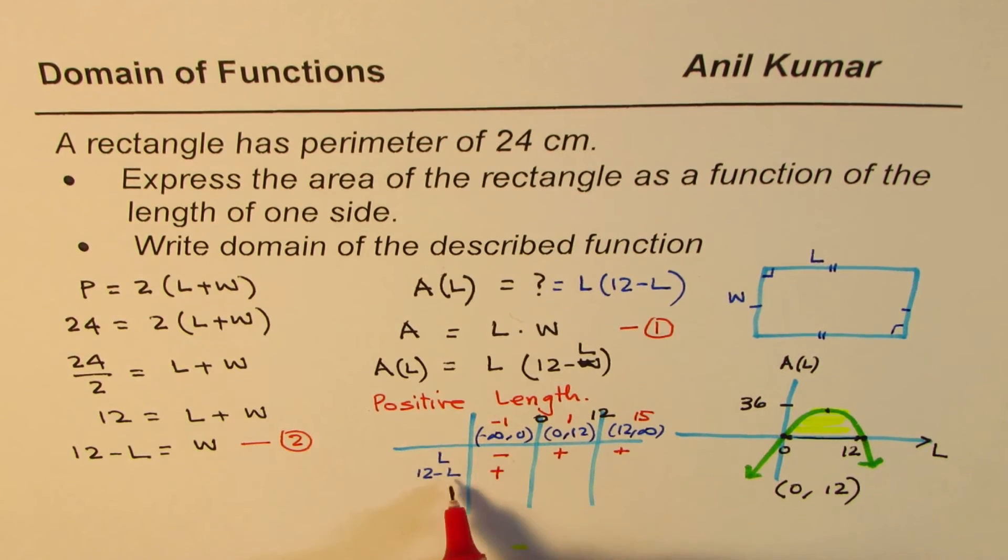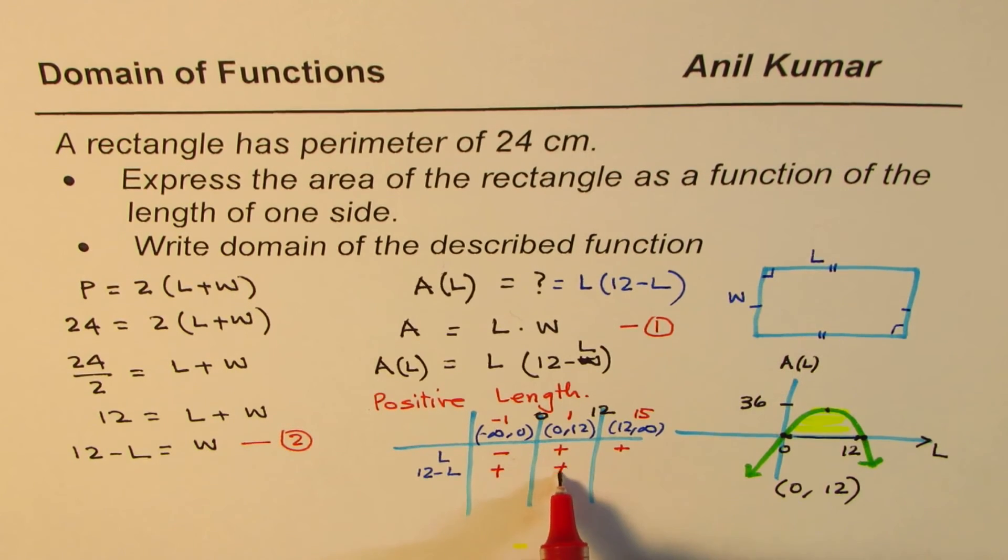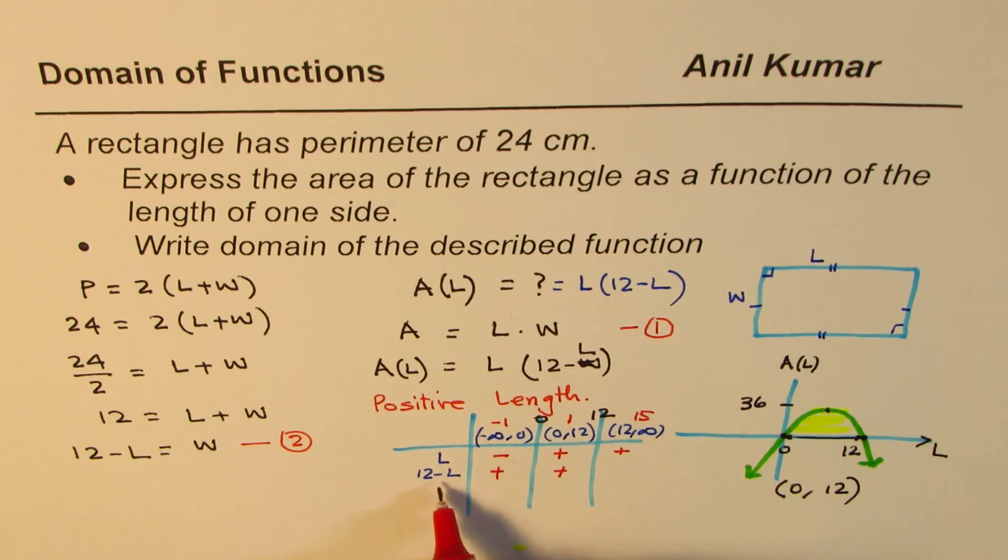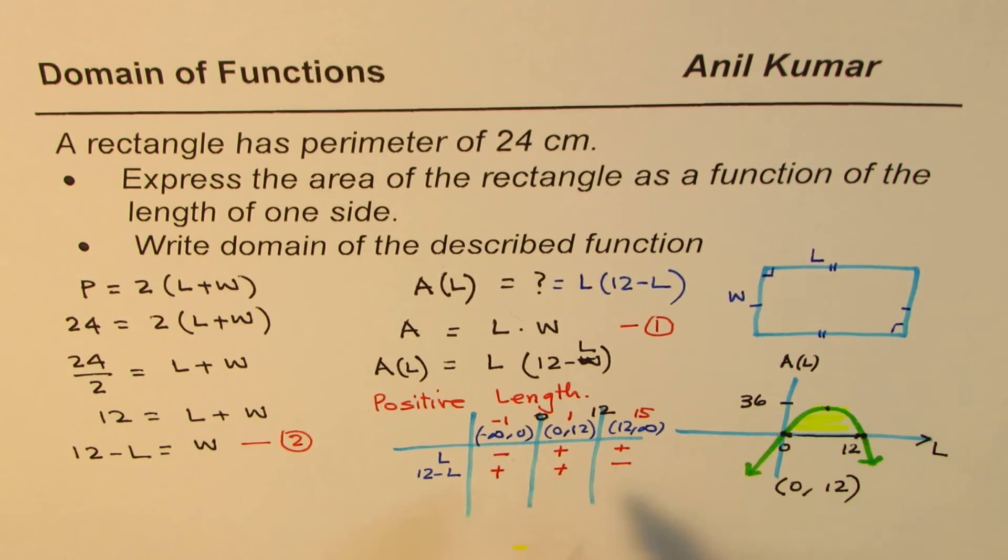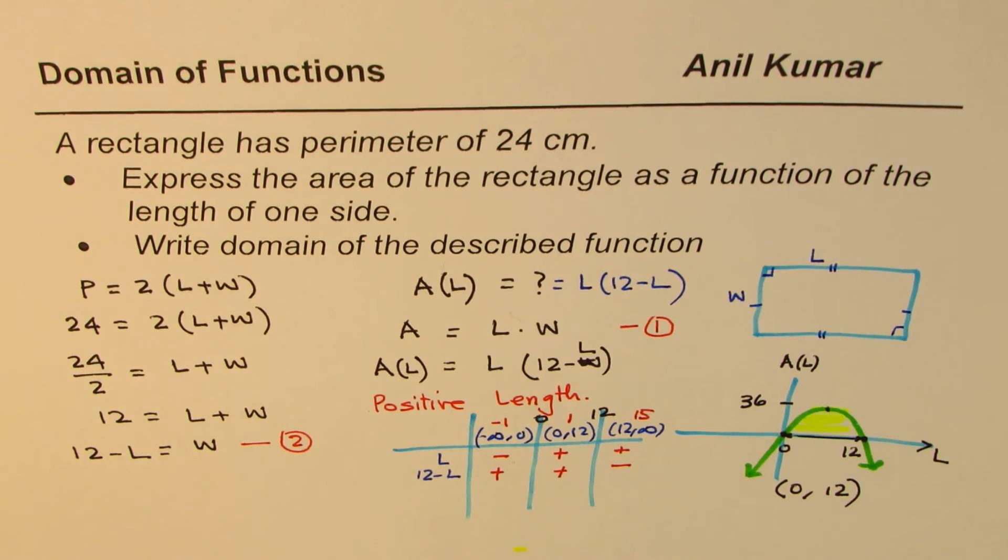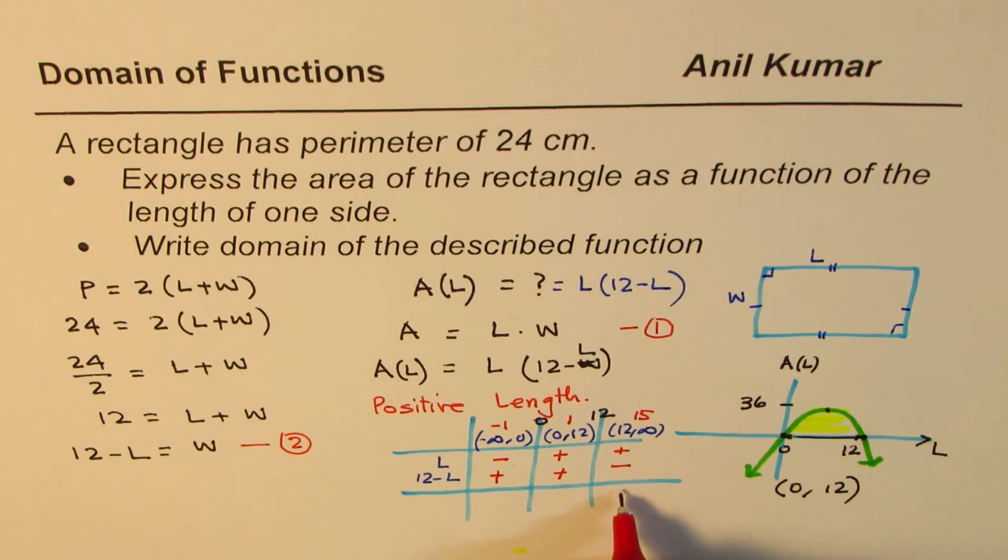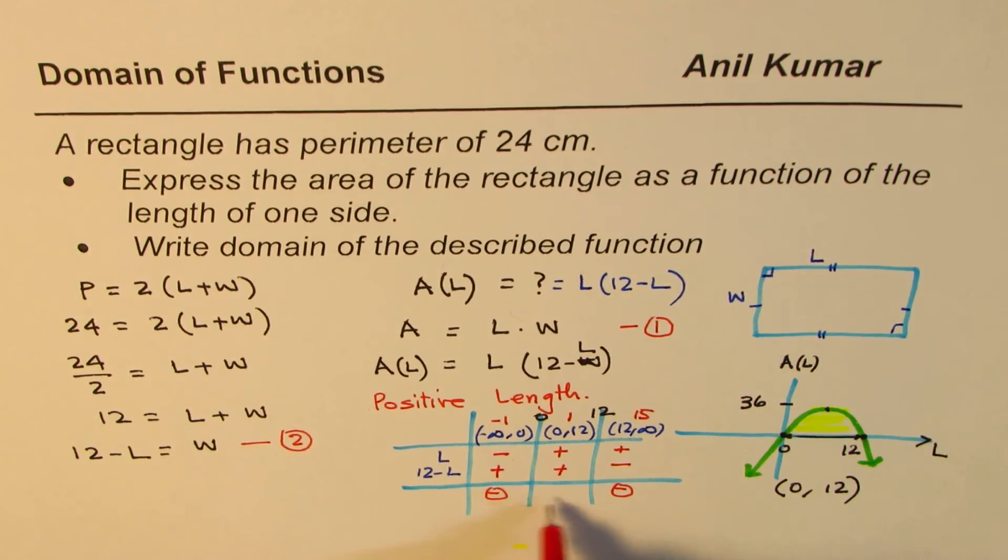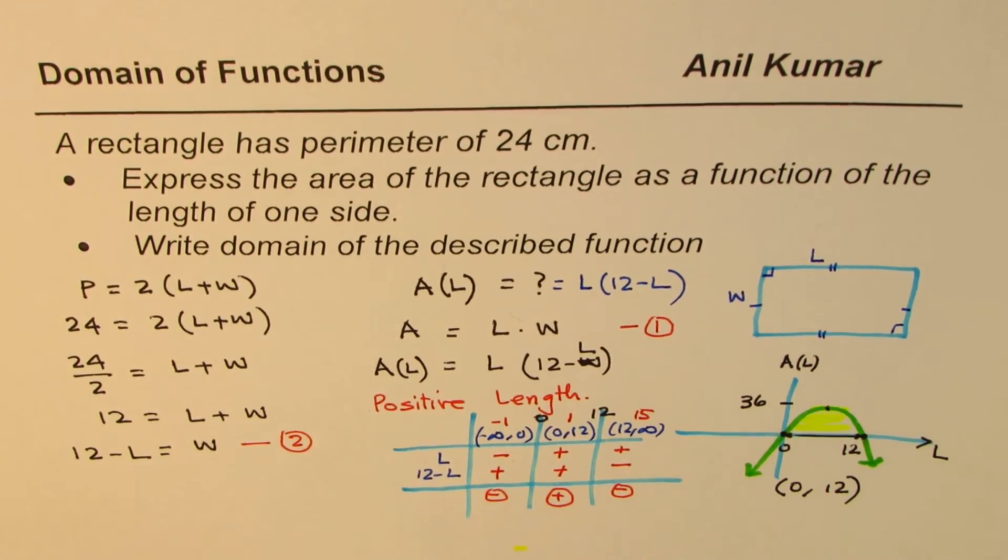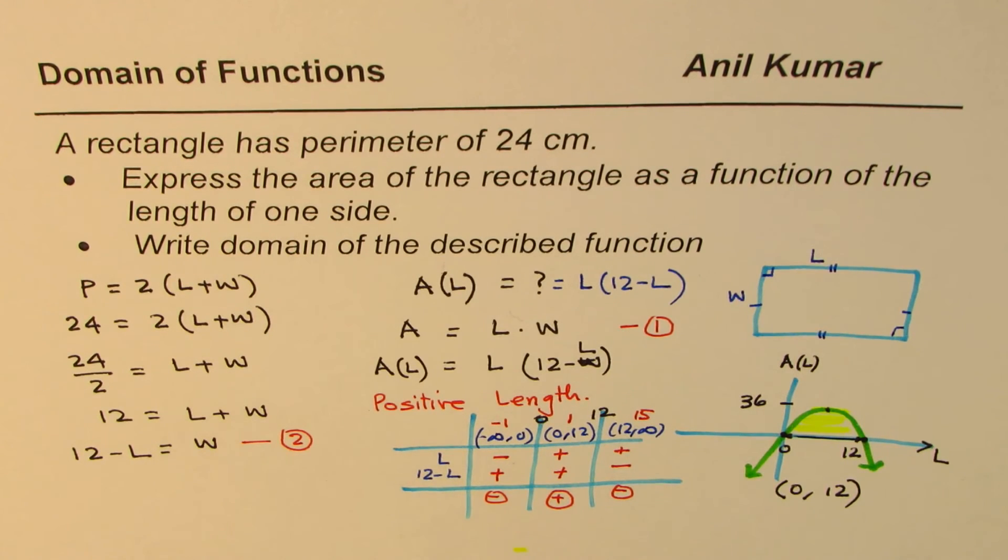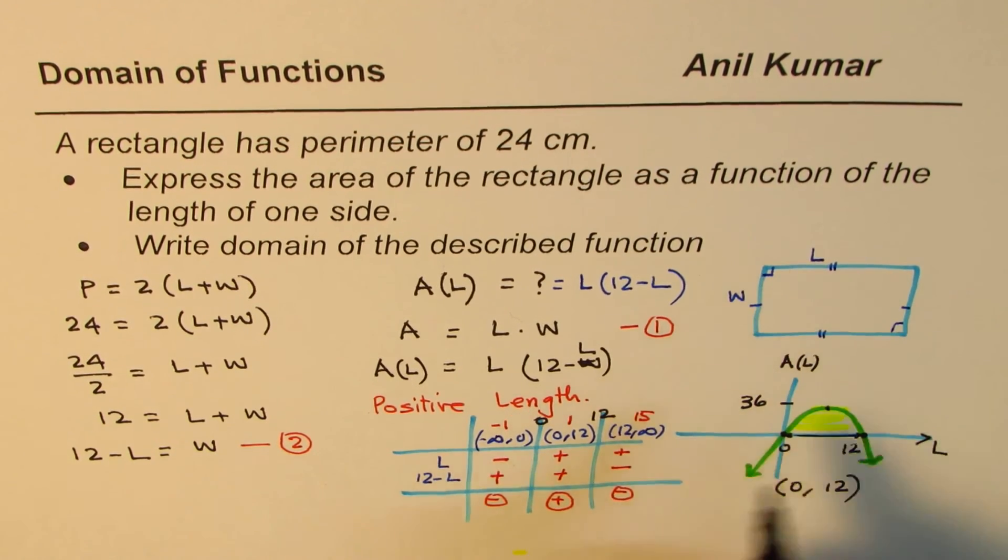Minus 1 positive, minus 1 is also positive. But if I write 15, 12 minus 15 is negative. Now as you know, product of two positives is positive. Product of a positive and a negative is negative. So these ones are negative for us, and this one is positive.